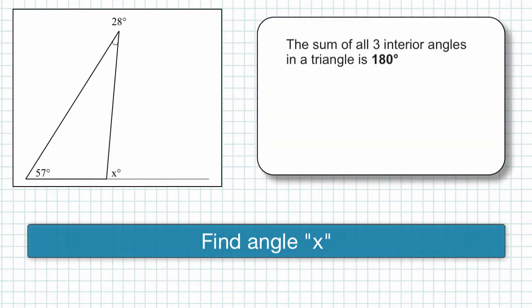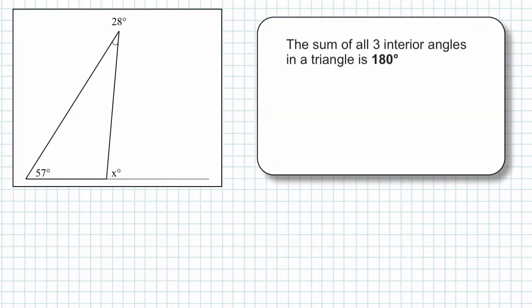To find x, we need to look at the triangle itself. Remember, the interior angles of a triangle add up to 180 degrees, so we just need to find the missing angle, A.